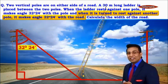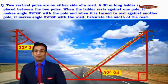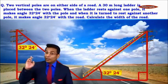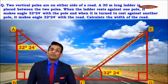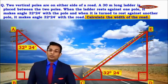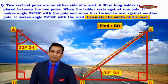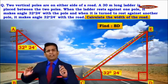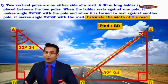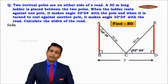This is a very important distinction: first, the angle is with the pole; then, the angle is with the road — 32 degrees 24 minutes in both cases. We need to calculate the width of the road, which means finding the length of BD. It's going to be very easy and simple.